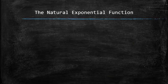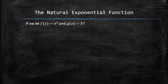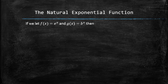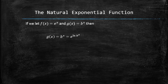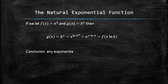If we let f be the natural exponential function and g any other arbitrary exponential function, then the following manipulation can always be performed. This means any exponential function can be expressed as a linear transformation of the natural exponential function.